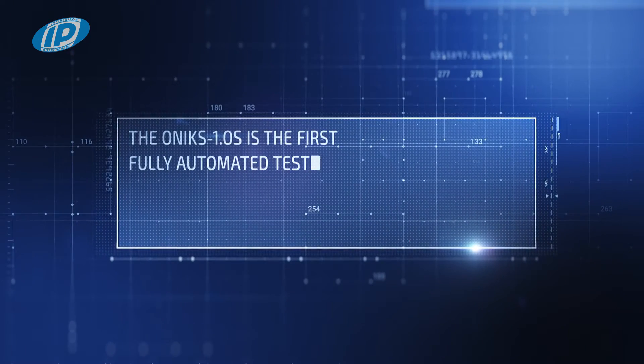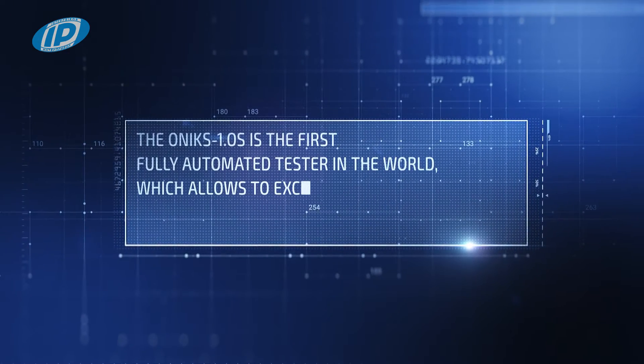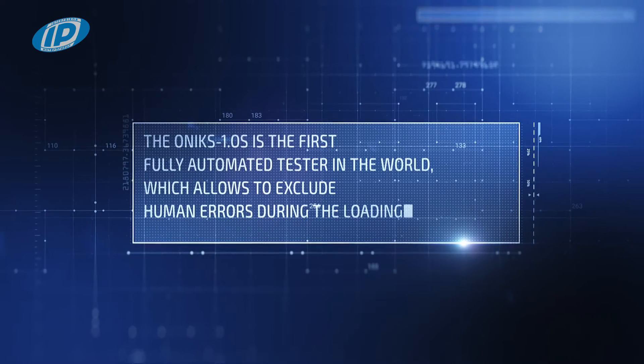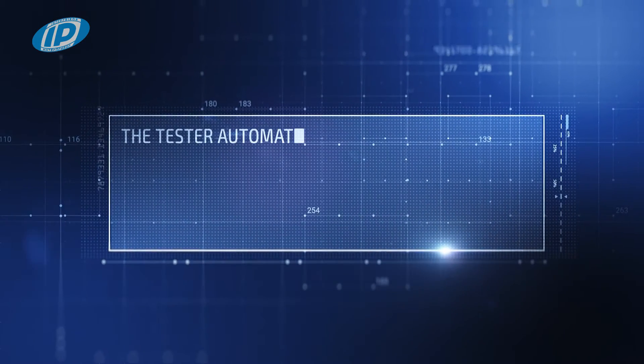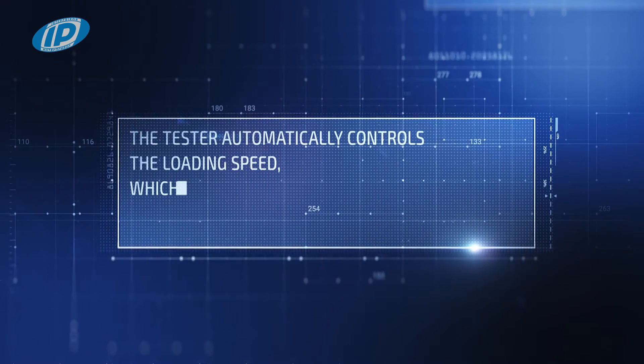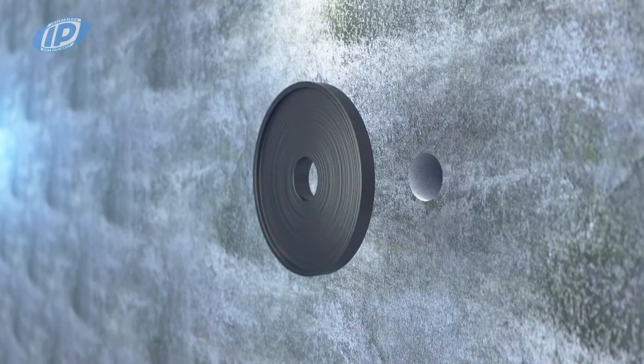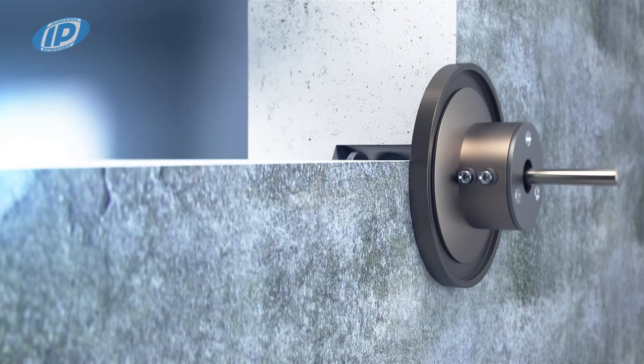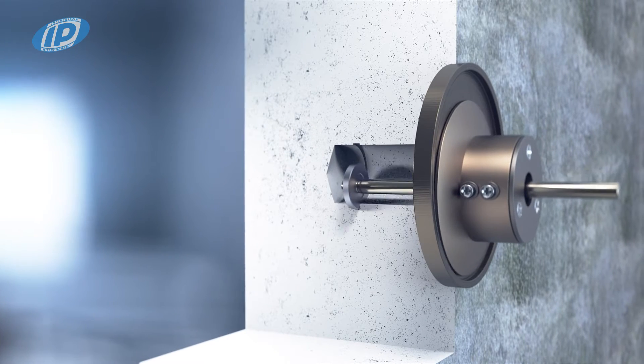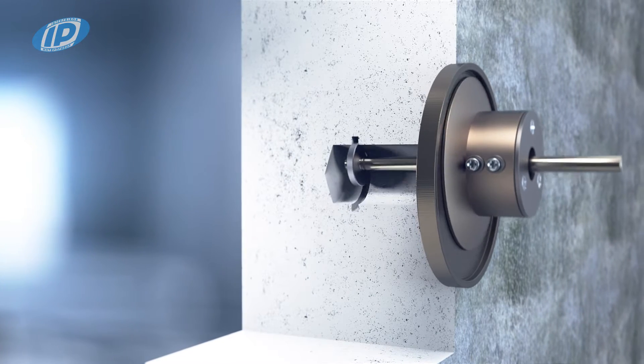In fact, the Onyx One OS is the first fully automated tester in the world which allows it to exclude human errors during loading. The tester automatically controls the loading speed, which is a significant advantage over analogs. We also apply the patented method of testing with a groove for the anchor, which eliminates side slip motion during the test and thus increases the measurement accuracy.